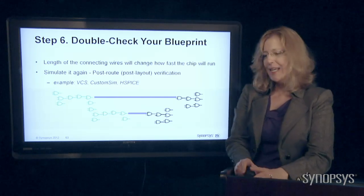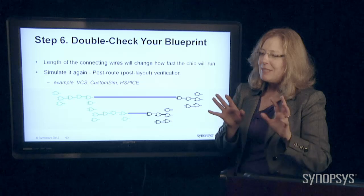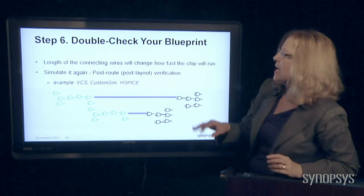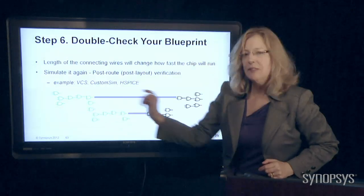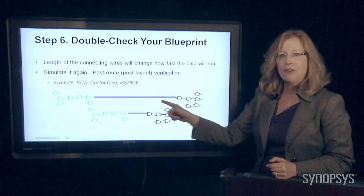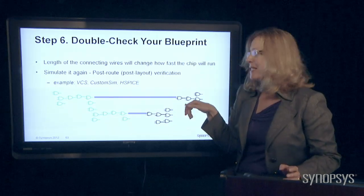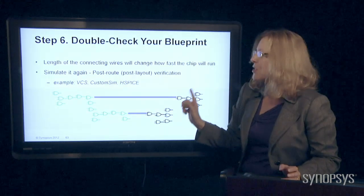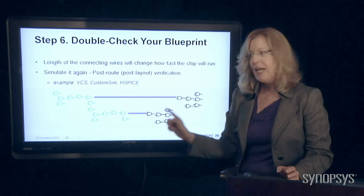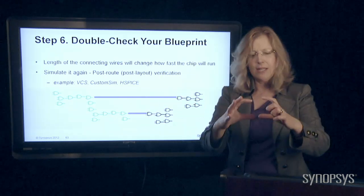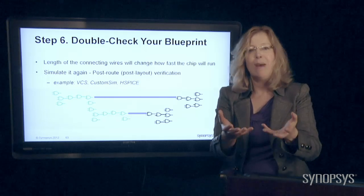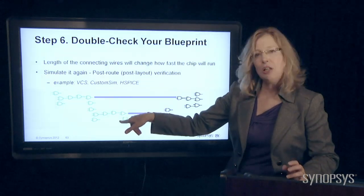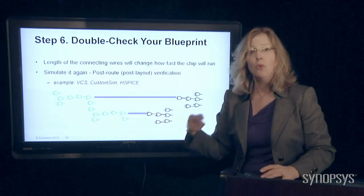After place and route it's really critical to simulate one more time to make sure no mistakes were introduced. For example, if these gates were placed far apart and routed together by a long wire — if that's my cell phone ringer and the wire is a mile long, the ringer is not going to ring fast enough. During simulation that would show up as the diagnostic report saying my cell phone ringer takes 10 minutes — that's bad. So I'd go back to place and route, place them closer, and route them with a shorter wire so it works properly.